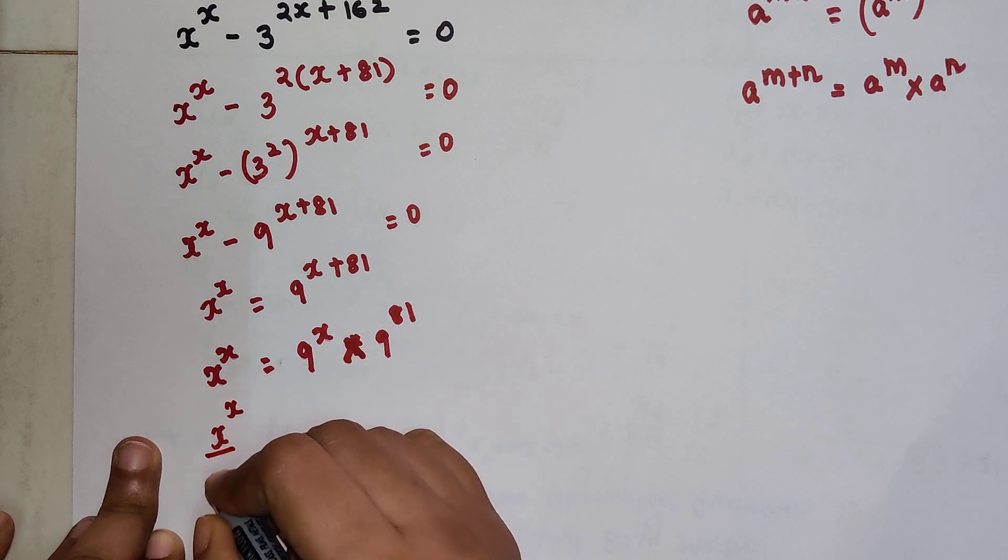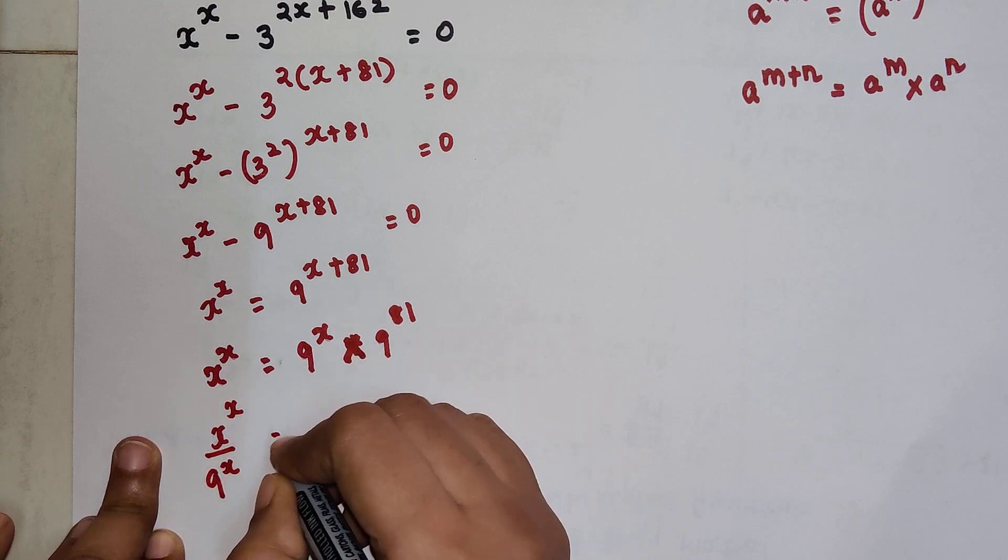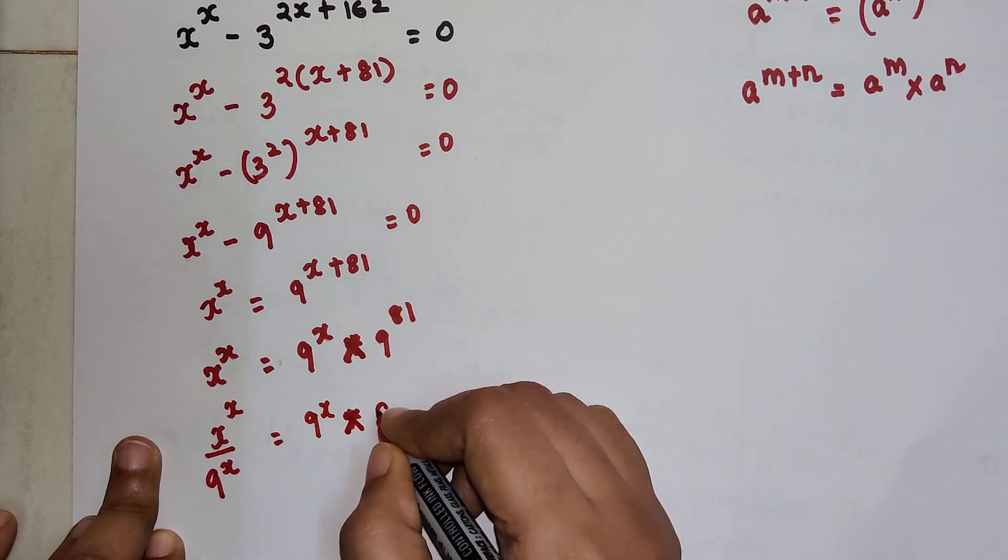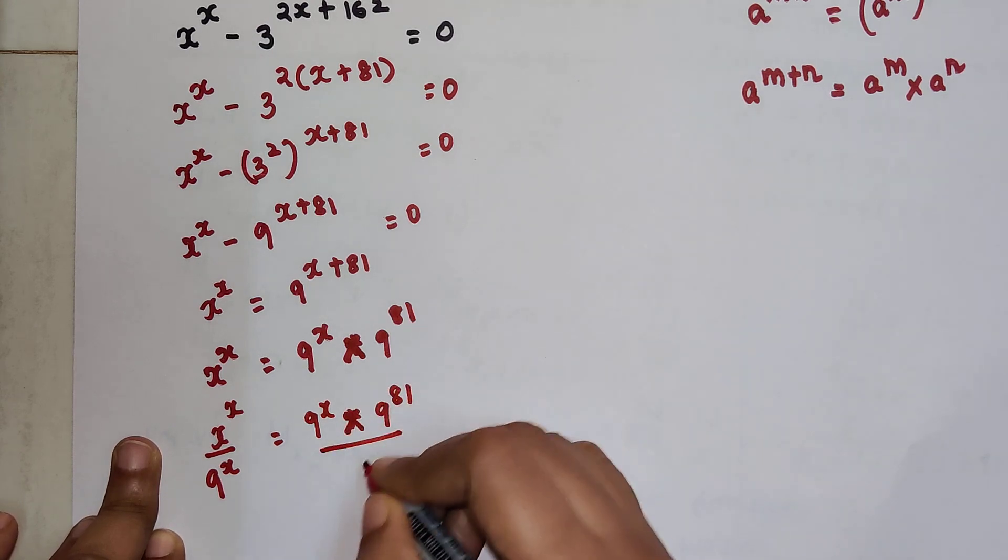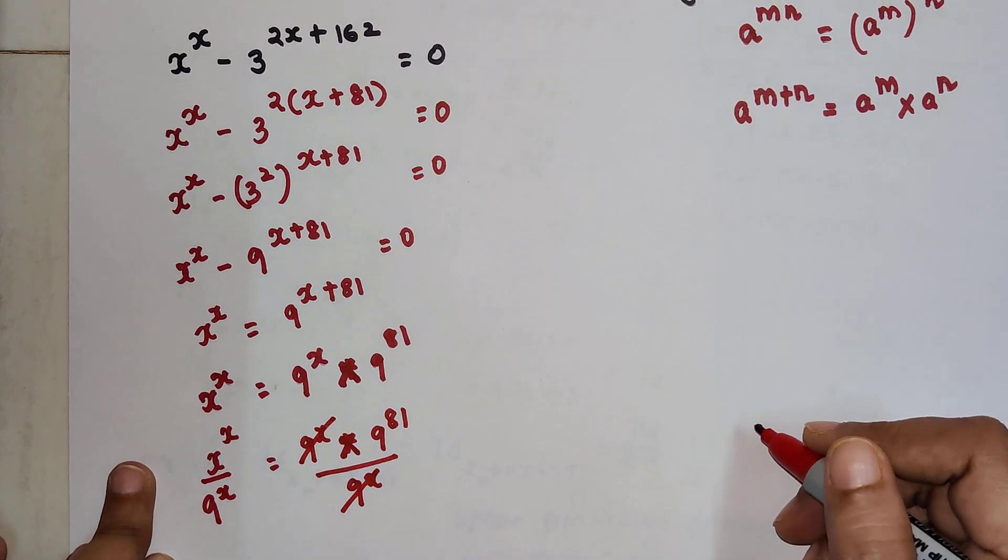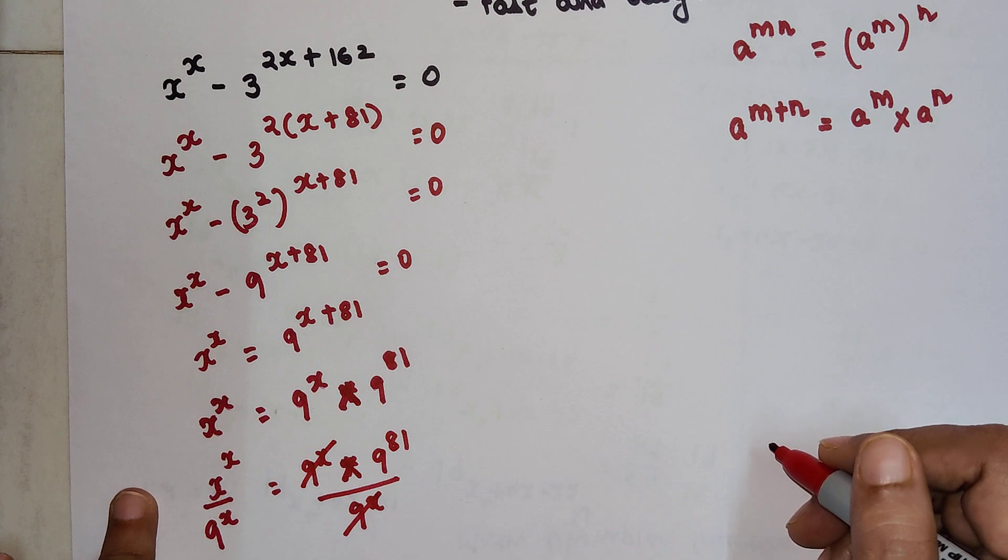So here I will have x raised to x upon 9 raised to x equals 9 raised to 81. These will cancel on the left side.